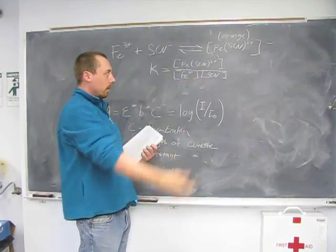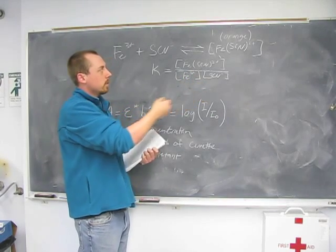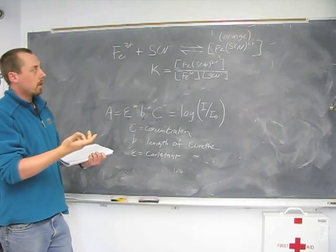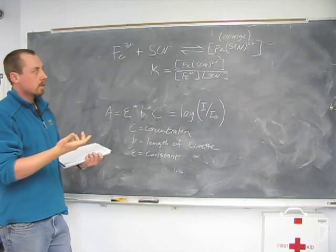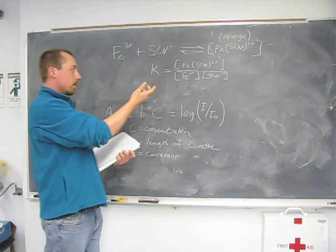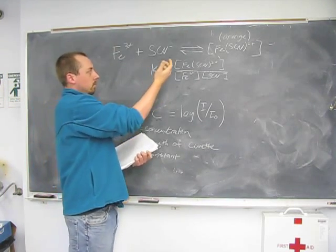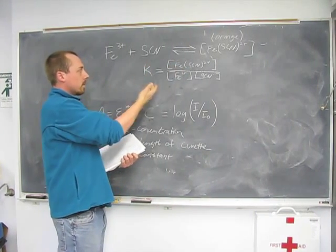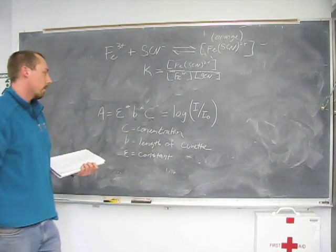We know that iron thiocyanate is orange, so by measuring the amount of absorption or transmittance, we can measure the concentration of iron thiocyanate and then solve for the equilibrium constant.